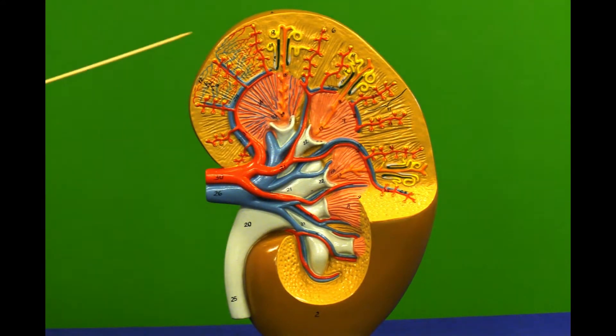All of the blood vessels, nerves entering and exiting the kidney will come through the small arch here, the lesser curvature known as the renal hilum.